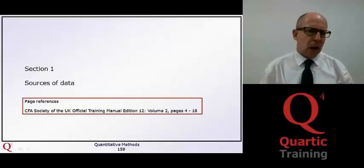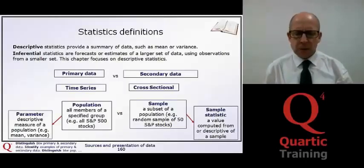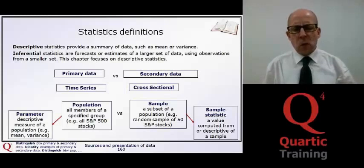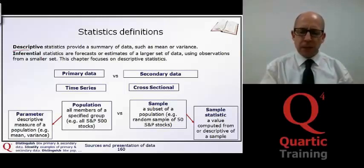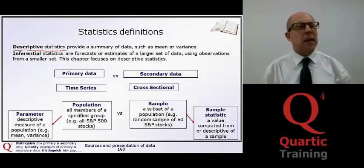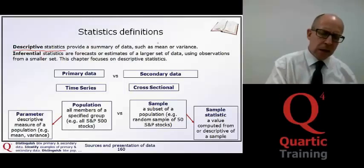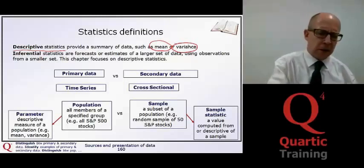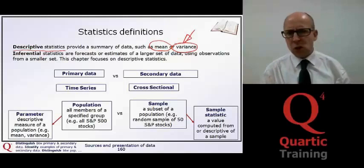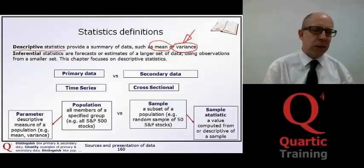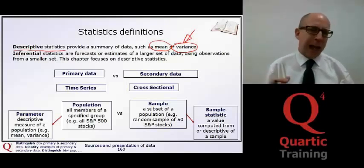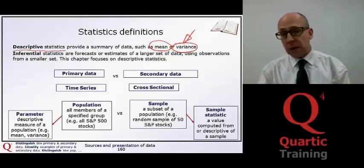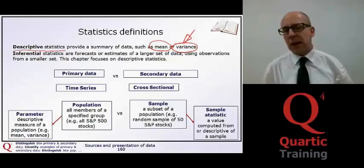The first section we're going to look at are the sources of data. So first of all, we're looking at some statistical definitions here. When we talk about descriptive statistics, this is where we've basically got a summary of the data, measures like the mean or the variance of a particular thing. The variance, of course, as we saw earlier on, particularly the measure of standard deviation, is basically a unit of risk that we're trying to understand. How far the actual outcome in a particular series, like for example, the returns on a stock, could deviate from the mean.